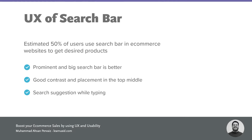The first thing is that a prominent and big search bar is better — bigger is better. Second is good contrast and placement in the top middle, which plays a big role and makes it easy for users to type. Third is search suggestions, which is really important because your search engine suggestion capability is going to do magic for your customers.